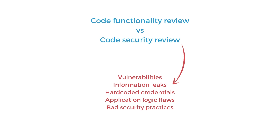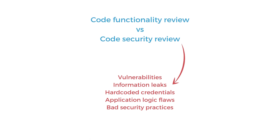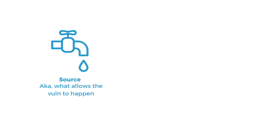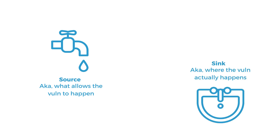Before we get started, let's discuss a few code analysis concepts you need to understand. In the code analysis world, a source refers to the code that allows a vulnerability to happen, whereas a sink refers to where the vulnerability actually happens.